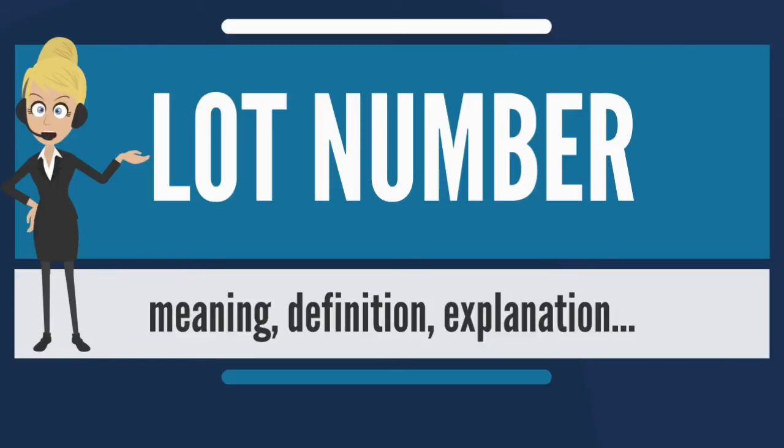For cars, a lot number is combined with a serial number to form the vehicle identification number.